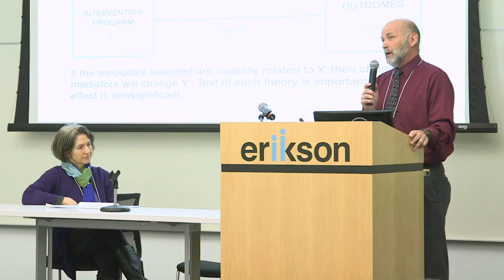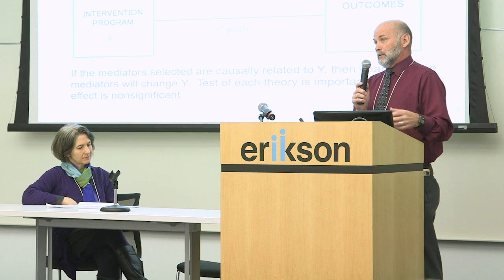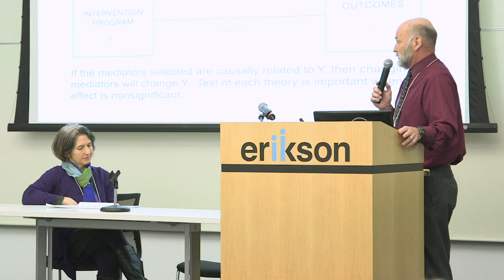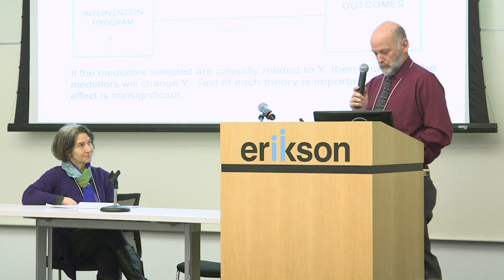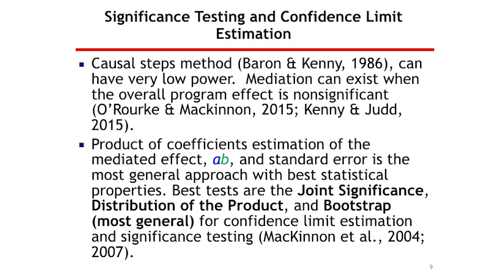The idea is that if we really pick mediators that are causally related to the outcome and we change them, we'll change the outcome. To test significance, remember A times B in that first diagram. The most widely known method is the causal steps method described in Judd and Kenny and Baron and Kenny. It can have really low power — it's possible to have mediation even when the overall effect is not statistically significant. The product of coefficients method, the product of A times B, is the most general method with the best statistical properties.